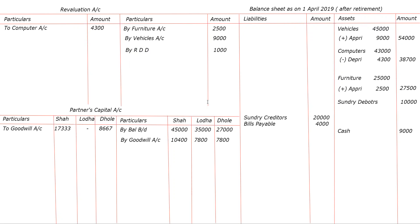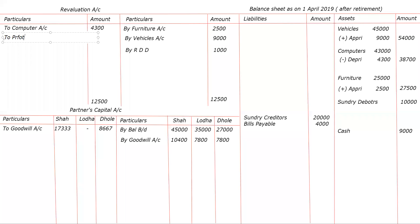Before transferring Lodha's amount, we have to close the revaluation account first. The total on the credit side is: 9,000 plus 1,000 plus 2,500 = 12,500. The difference gives a profit on revaluation account of 8,200.